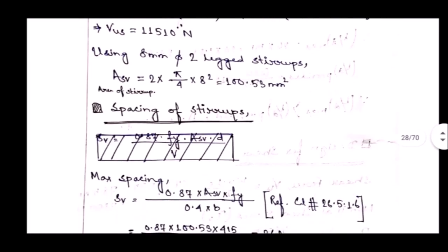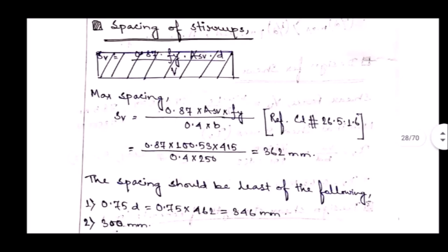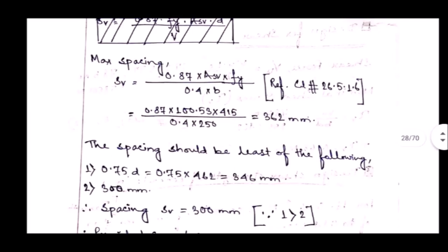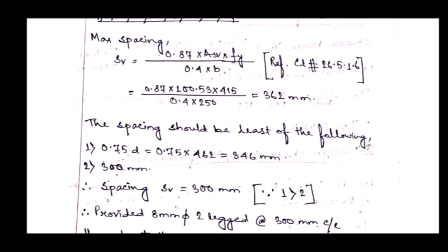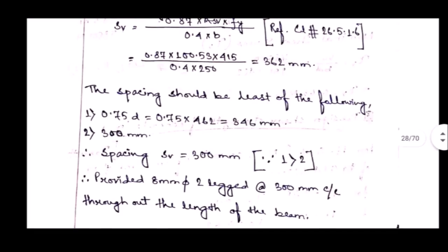For maximum spacing of stirrups, the formula from clause 26.5.1.6 is: SV = 0.87 × Fy × ASV / (0.4 × B) = 362 mm. The spacing must also not exceed 0.75D = 0.75 × 462 = 346 mm. Taking the lesser value: 300 mm. Therefore, we provide 8 mm 2-legged stirrups at 300 mm center-to-center throughout the length of the beam.